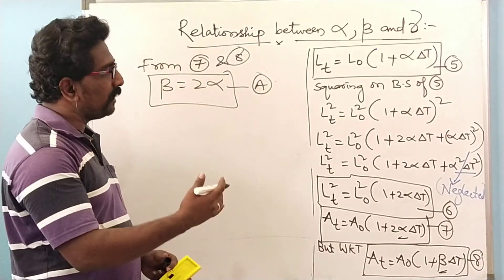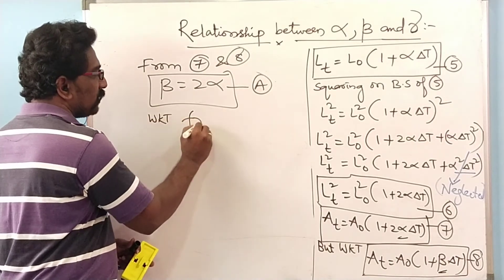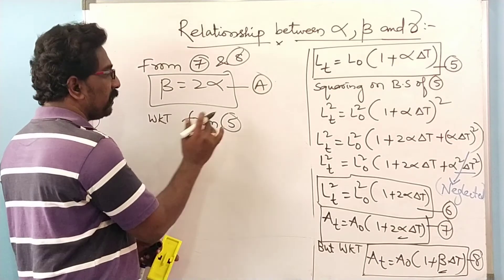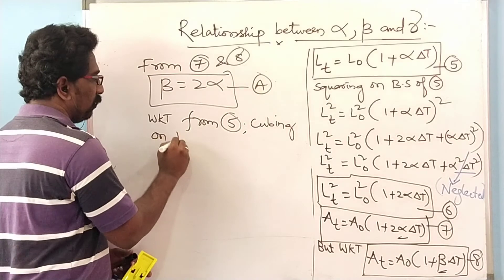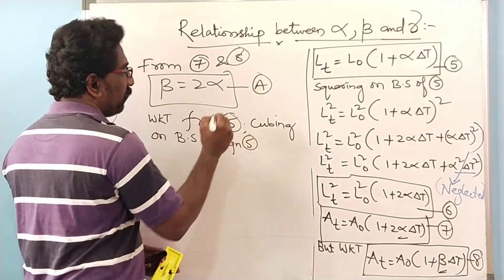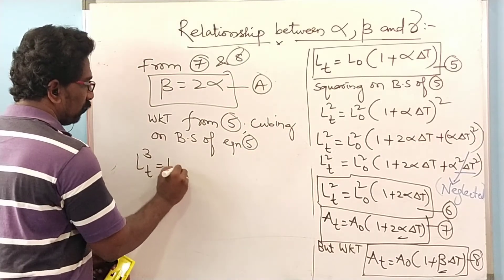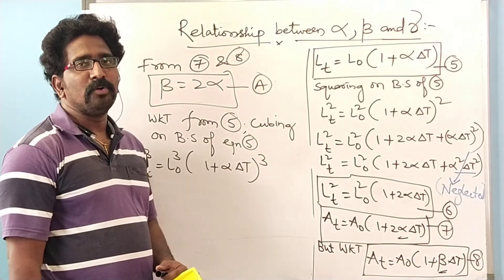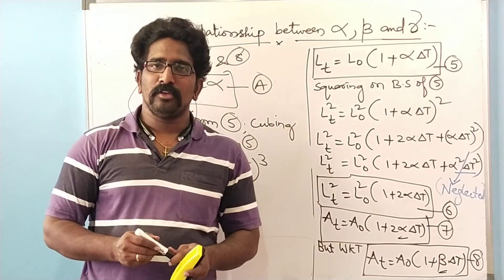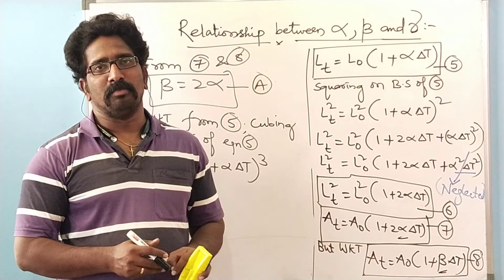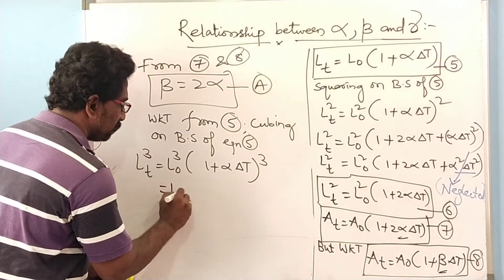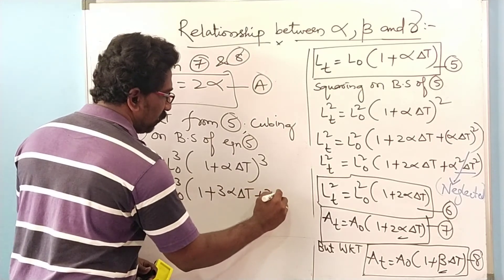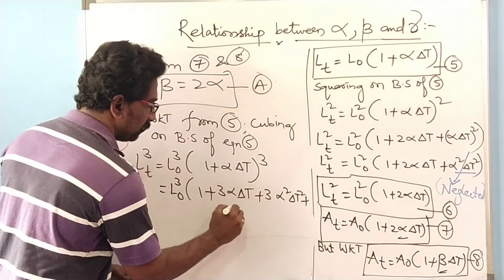In the same way, from equation 5, if I cube both sides, I get L-T cubed equals L-naught cubed times (1 + alpha delta T) whole cubed. This term is in the form of the (A + B)³ formula, which expands to A³ + 3A²B + 3AB² + B³. Applying this formula, we get L-naught cubed times (1 + 3 alpha delta T + 3 alpha squared delta T squared + alpha cubed delta T cubed).